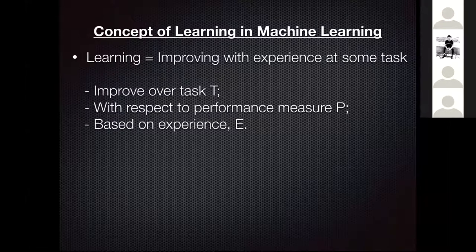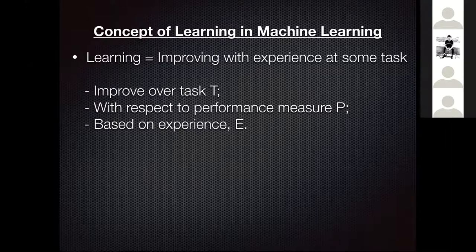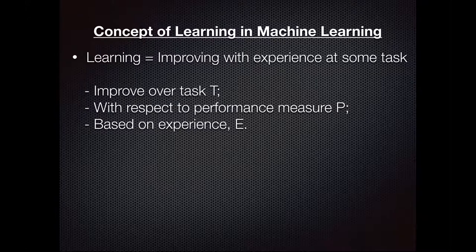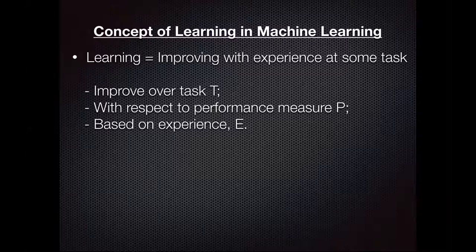Next, we are going to see the concept of learning in machine learning. Learning is improving with experience at some task. For example, suppose you have an animal in front of you and somebody tells you it is a dog. The next day, there is an animal in front of you and you are asked to identify it. Because you were shown that animal yesterday and told it was a dog, you identify it as a dog. Here you have improved your experience and given the answer — that is a kind of machine learning algorithm.